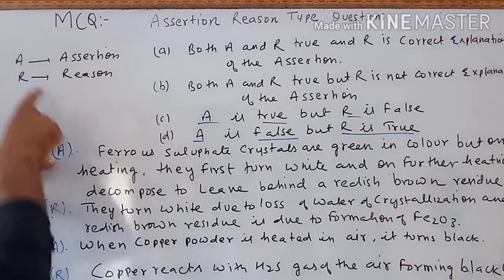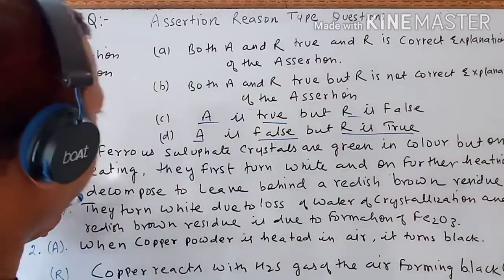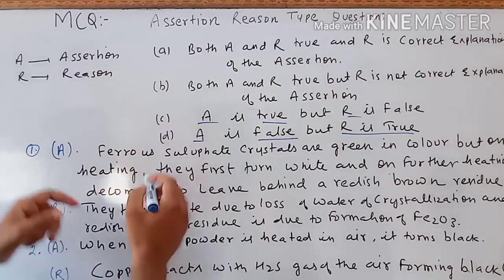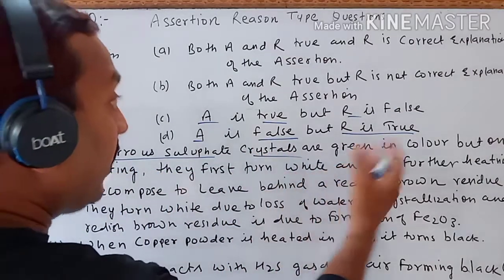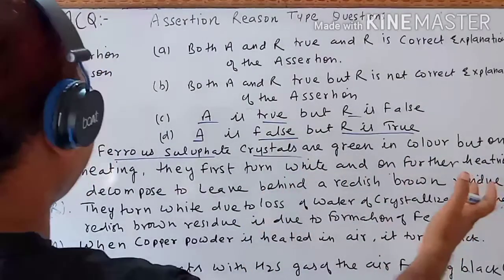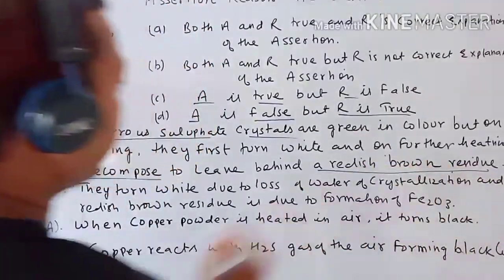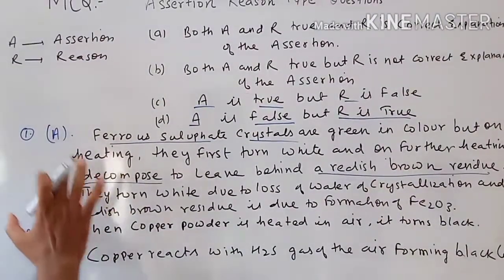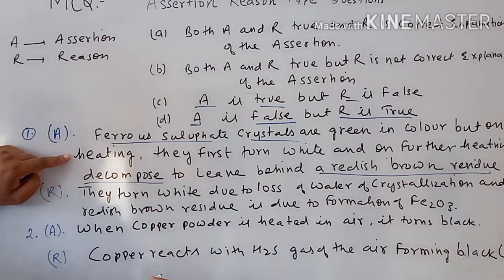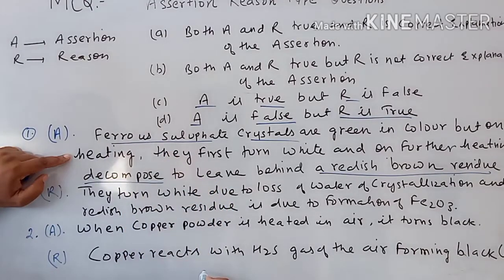Here A stands for Assertion and R stands for Reason. Now taking up question one: the Assertion states that ferrous sulfate crystals are green in color. Let's check if this is correct or wrong by referring to the chapter on chemical equations. This topic belongs to decomposition reaction.